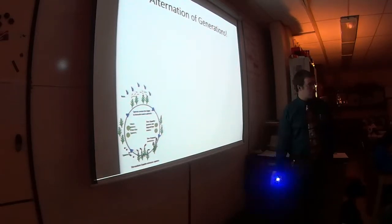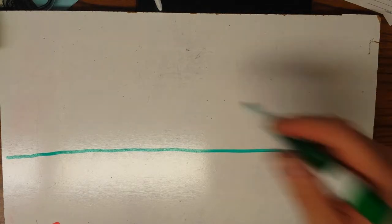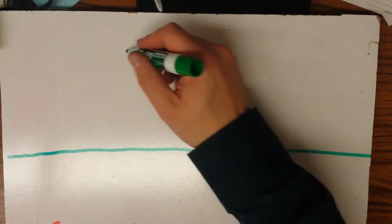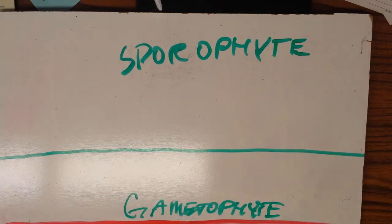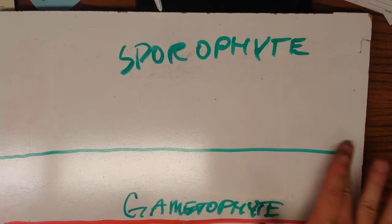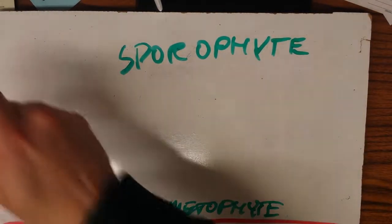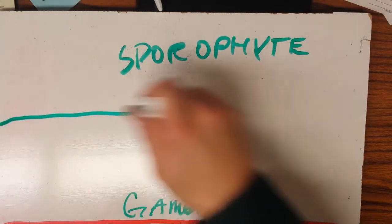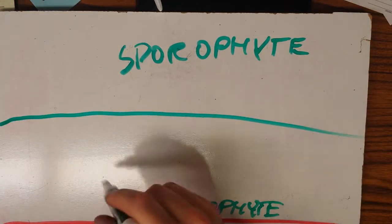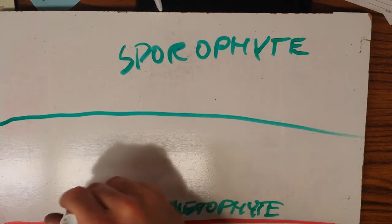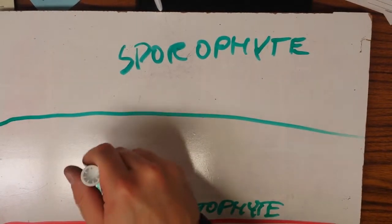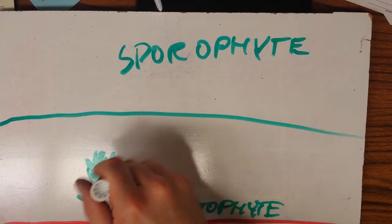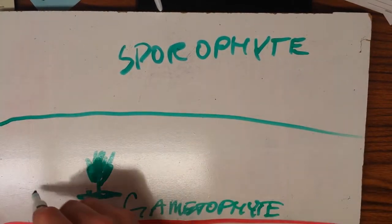They have the alternation of generations. You should have a nice dividing line separating your sporophyte generation from your gametophyte generation. Since the gametophyte generation is the main generation, we should probably devote a little more space to it. We'll start down here with our moss plant — it has its nice rhizoids doing its thing, and here it is, a nice green leafy moss plant. It's the gametophyte generation.